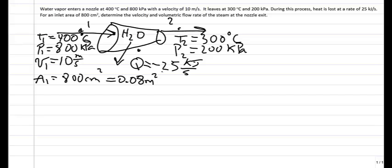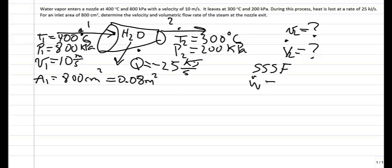We are trying to find the exit velocity V2 and the volumetric flow rate V dot at 2, which are our two unknowns. This is a single stream steady flow process, so we note SSSF. Additionally, it is a nozzle — a passive device — so there is no work associated with this process, meaning W dot equals zero.